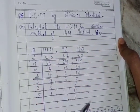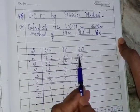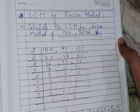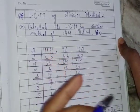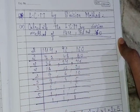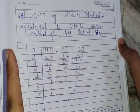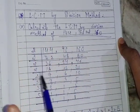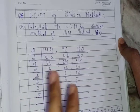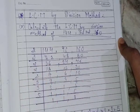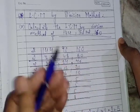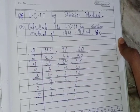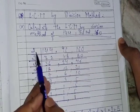Step one: write the numbers as shown. Divide all numbers by a prime number — a prime number that divides at least 2 of the given numbers, or more.